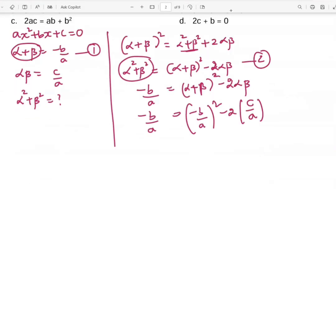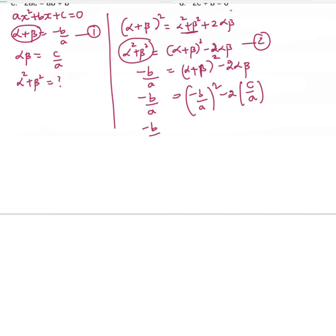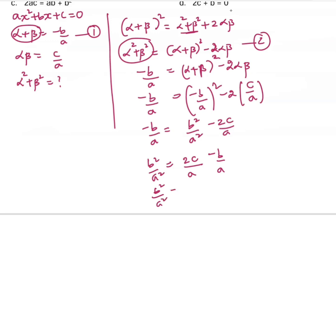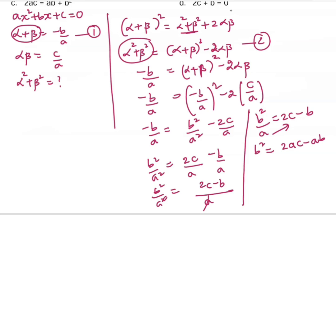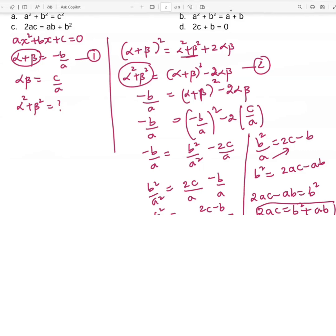We can write this as -b/a = b²/a² - 2c/a. Taking terms to the other side: b²/a² = 2c/a - b/a. Finding LCM: b²/a² = (2c - b)/a. Simplifying, b²/a = 2c - b, so b² = a(2c - b) = 2ac - ab. Therefore, 2ac = b² + ab. This is the answer, which corresponds to option C.